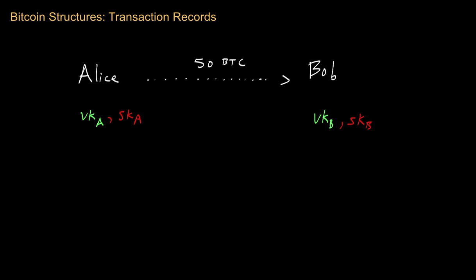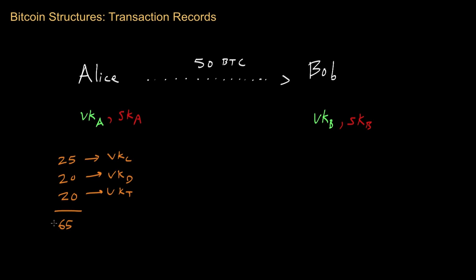Let's say Alice has received three prior transactions of Bitcoins from other parties. She got 25 Bitcoins from Carol (VK_C), 20 Bitcoins from David, and 20 more Bitcoins from Ted. So Alice now has an aggregate of 65 Bitcoins — 25 plus 20 plus 20 — and therefore has a sufficient number to transfer 50 of those Bitcoins to Bob.